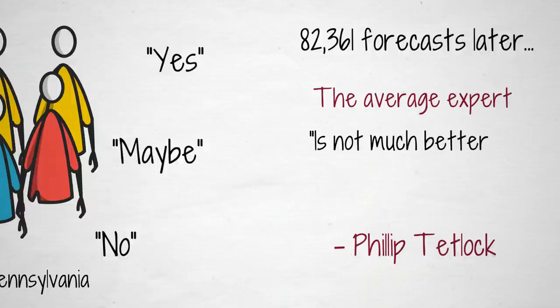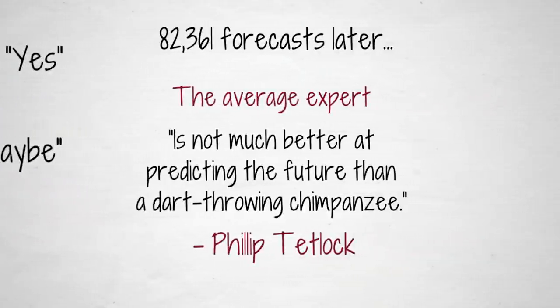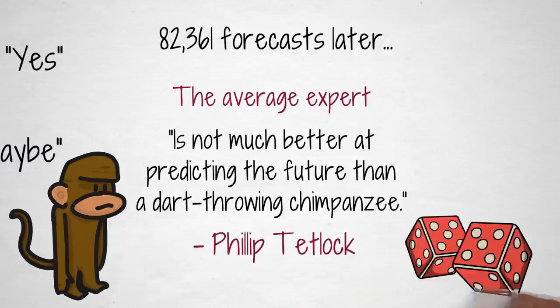According to Tetlock, the average expert is not much better at predicting the future than a dart-throwing chimpanzee. Tetlock suggested that most of these experts would have made better predictions if they had made random guesses.